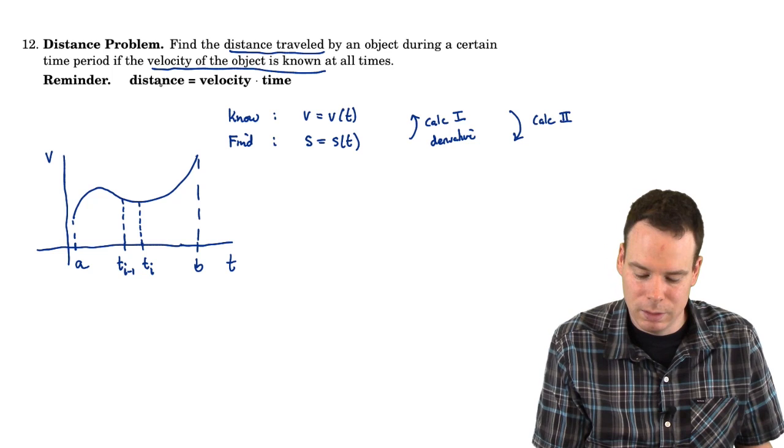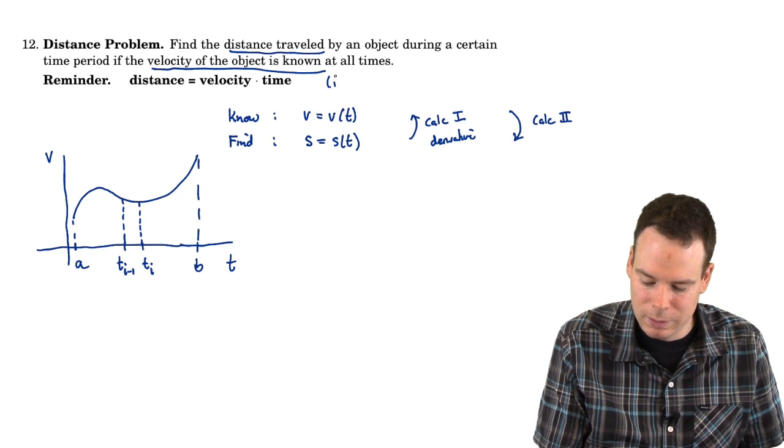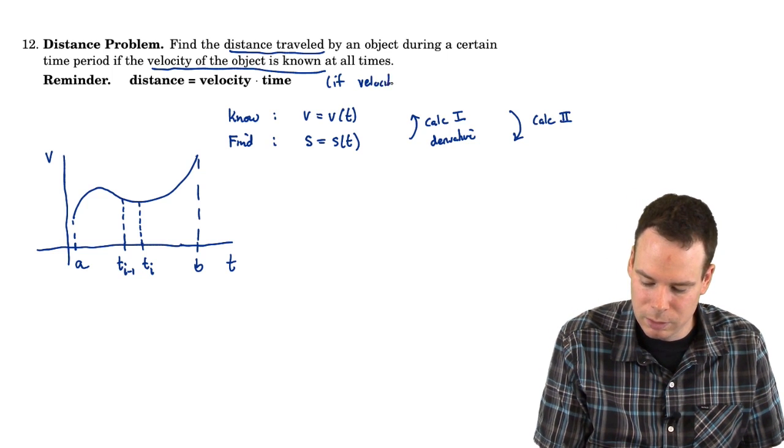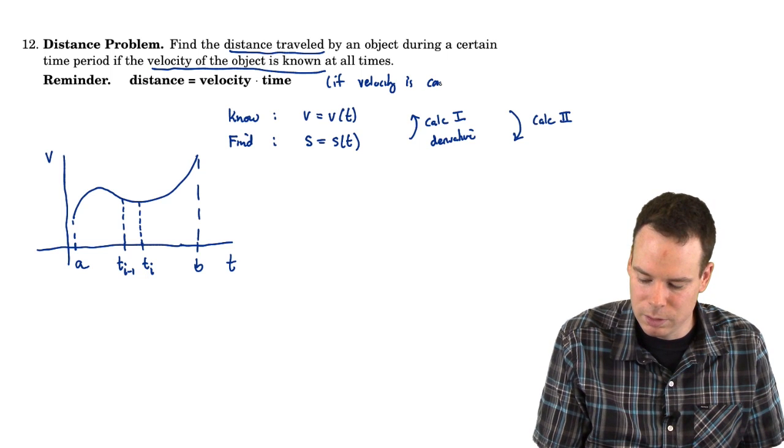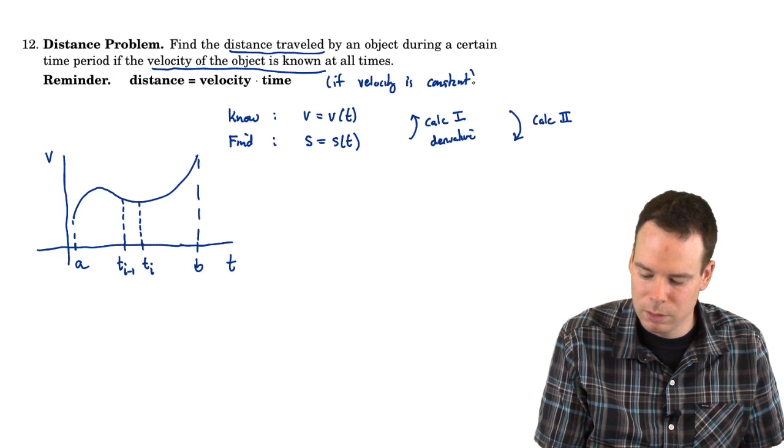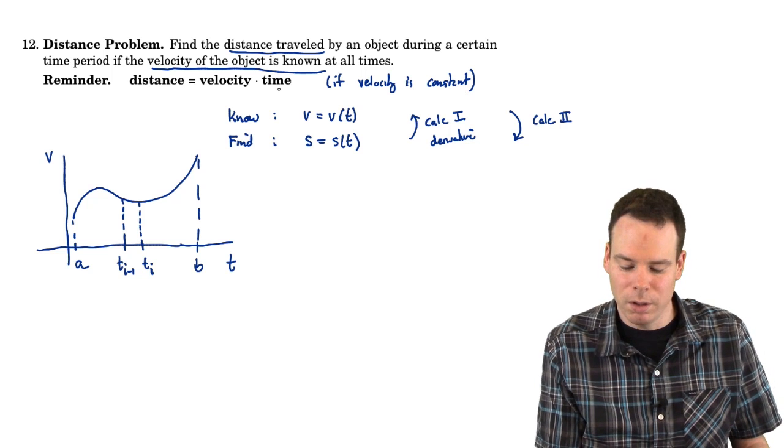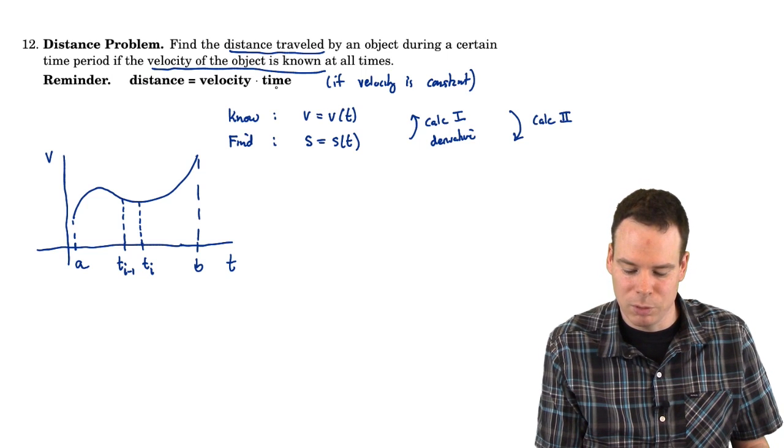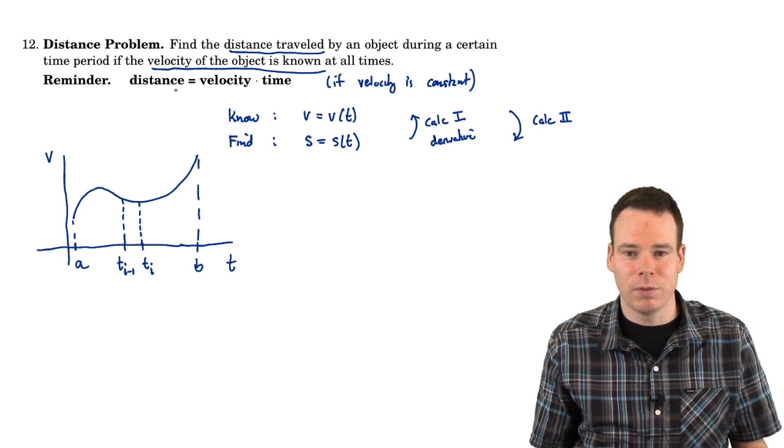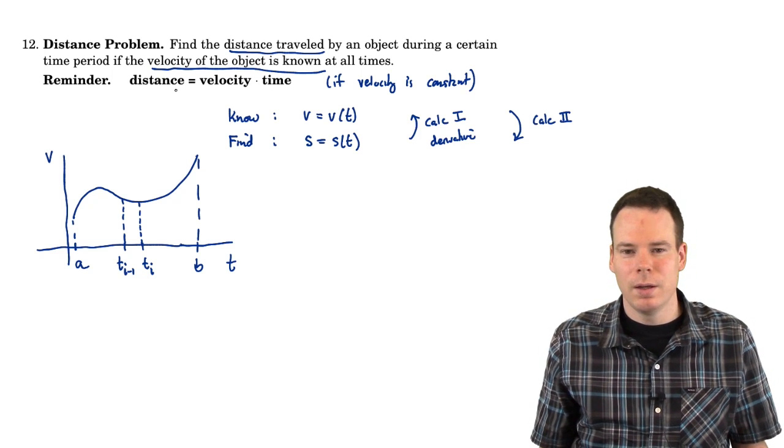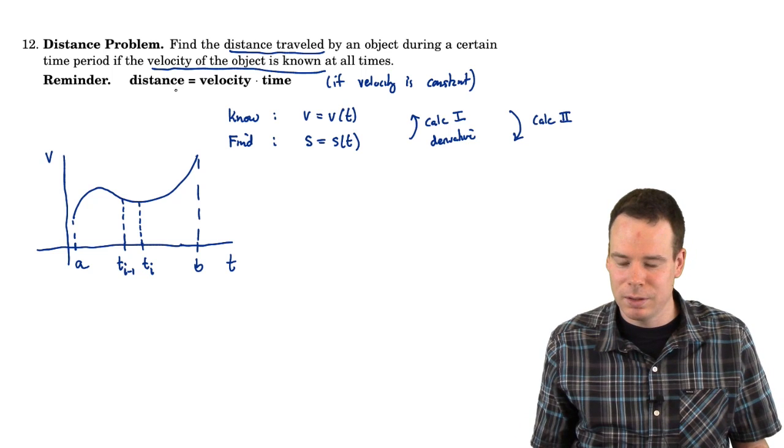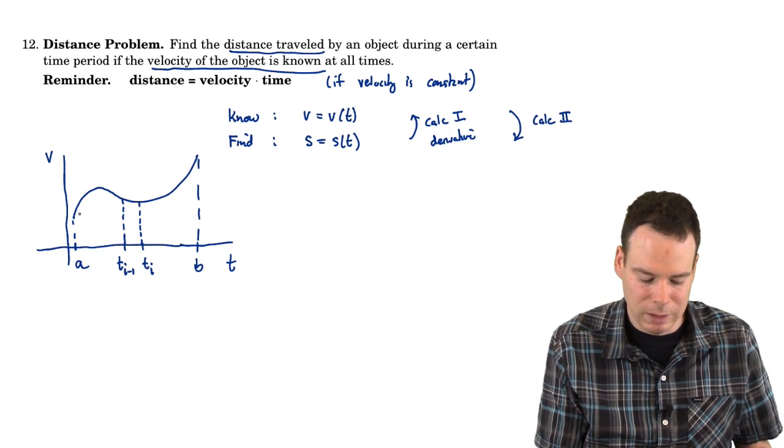Now the key with this, distance is velocity times time. This is if velocity is constant. If velocity is constant and we know how long the particle is traveling, the object is traveling, then I just multiply the velocity times a time and I can figure out how far it's traveled. But if velocity is not constant, well that's the situation we're dealing with right here.